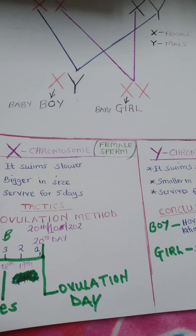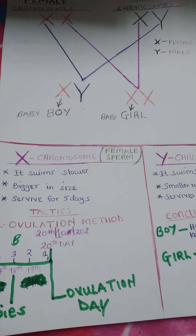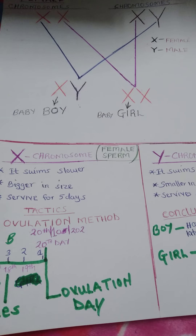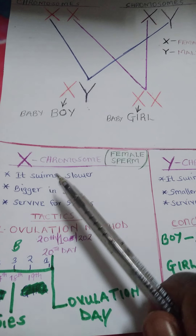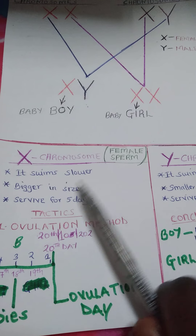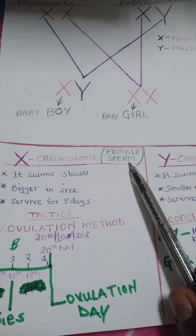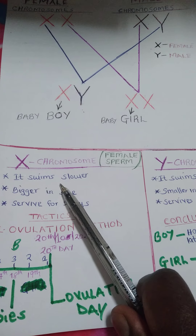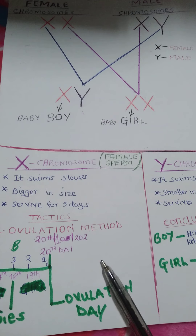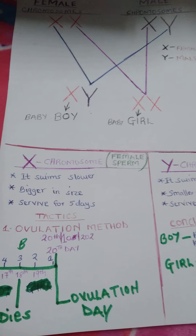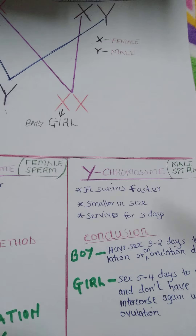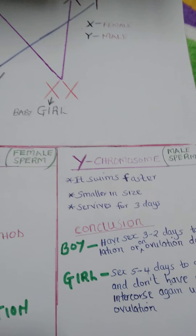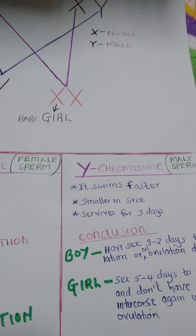Let's look at the characteristics that differentiate the X chromosomes from the Y chromosomes. When I say X chromosome, I mean the female sperm. This X chromosome swims in slow motion — it swims slower as compared to the Y chromosome, or the male sperm, which swims faster.